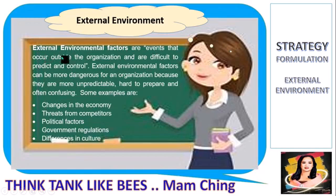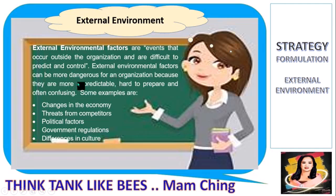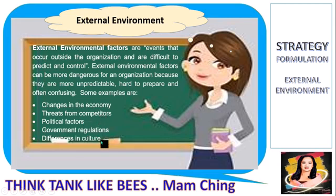For the external environment, they are factors or events that occur outside the organization and are difficult to predict and control. External environmental factors can be more dangerous for an organization because they are more unpredictable, hard to prepare for, and often confusing. Some examples are changes in the economy, threats from competitors, political factors, government regulation, and differences in culture.